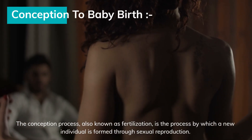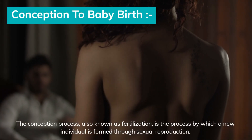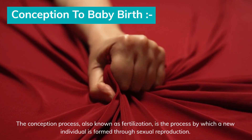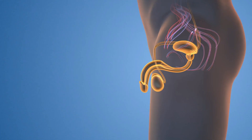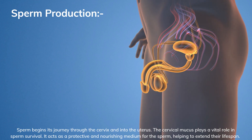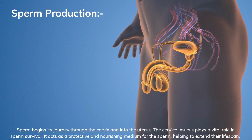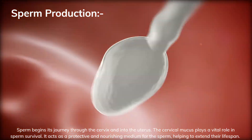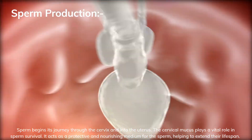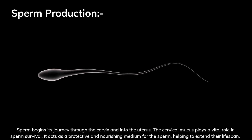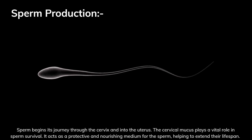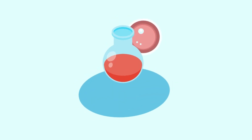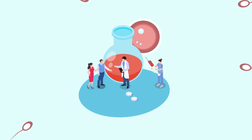The conception process, also known as fertilization, is the process by which a new individual is formed through sexual reproduction. Sperm begins its journey through the cervix and into the uterus. The cervical mucus plays a vital role in sperm survival — it acts as a protective and nourishing medium for the sperm, helping to extend their lifespan. Here is a step-by-step explanation of the conception process.